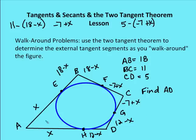The process of solving walk-around problems is to define one length as a variable x, then walk around the figure to define all other lengths in terms of x. The x terms cancel, and you find the unknown length. Please join us for practice problems on tangent secants and the two-tangent theorem on Otten Math.